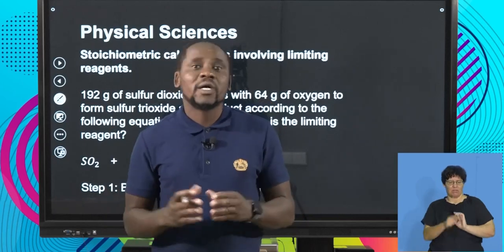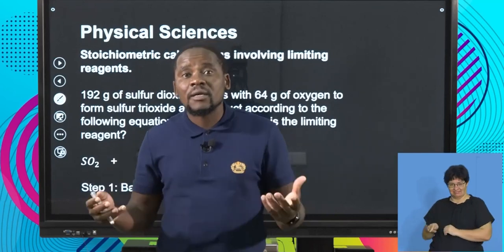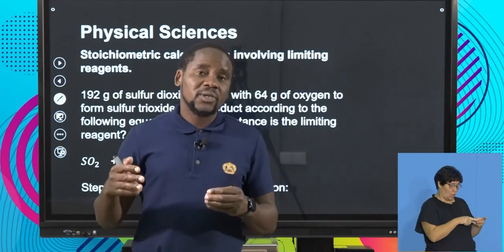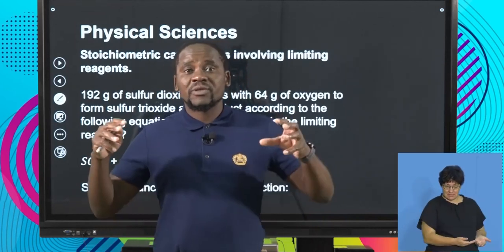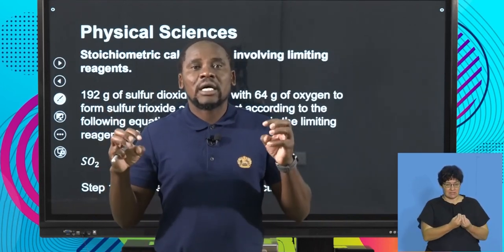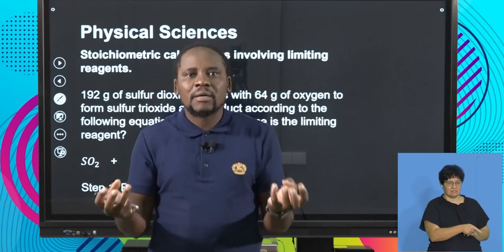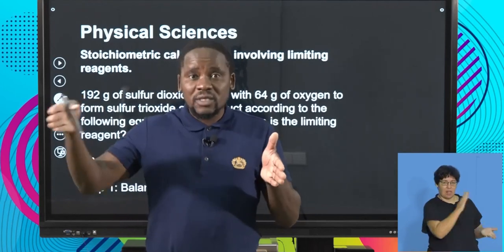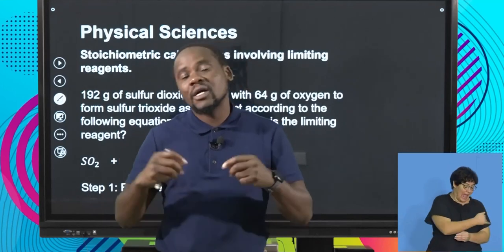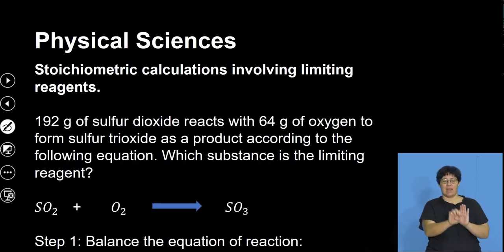We'll look at a scenario where two substances react with each other and we may be given their initial amounts, and we need to decide which one of the two is in excess and which one is the limiting reagent. Because these substances are not placed in the reaction vessel in exact amounts, the reaction will reach completion or stop as a result of one of the two reactants being used up. Now let's look at a practical example involving limiting reagents.